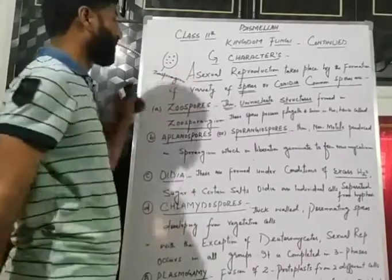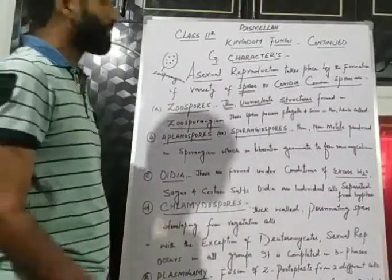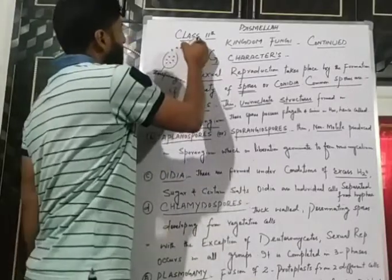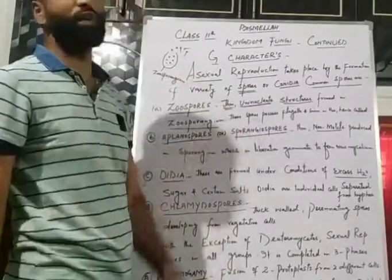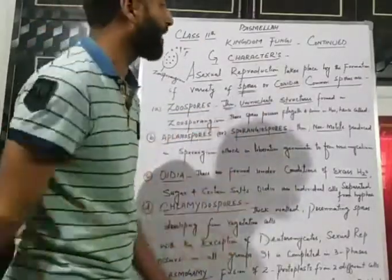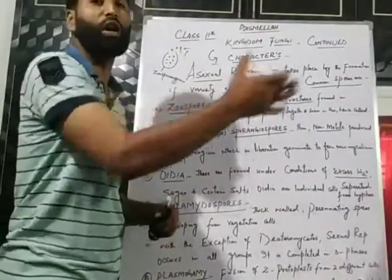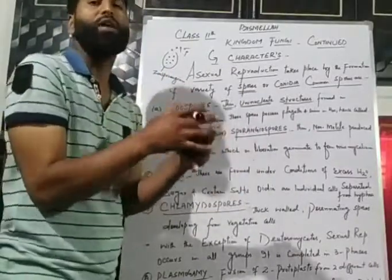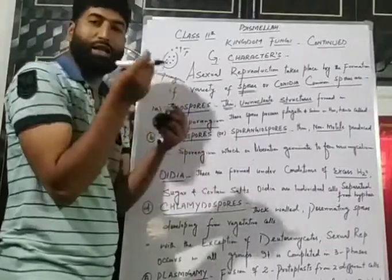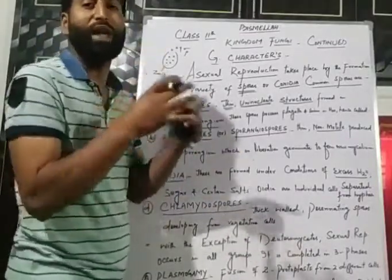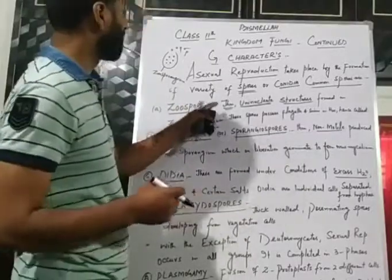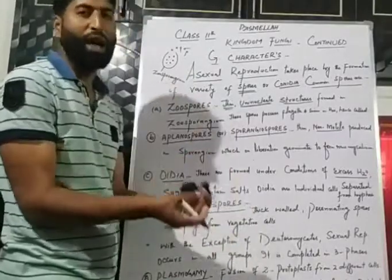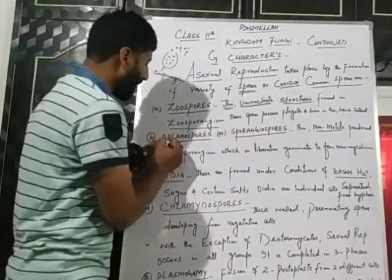Zoospores possess flagella and are capable of swimming in water. This is why they are called zoospores — they are thin, uninucleate spores which possess flagella and swim in water.